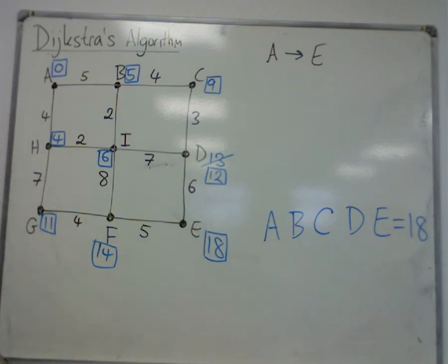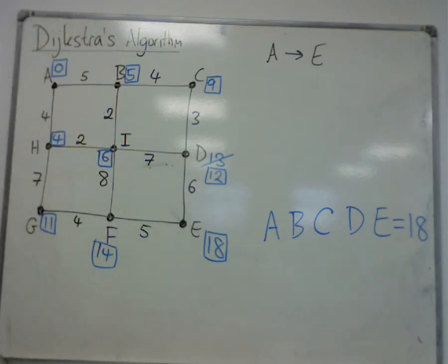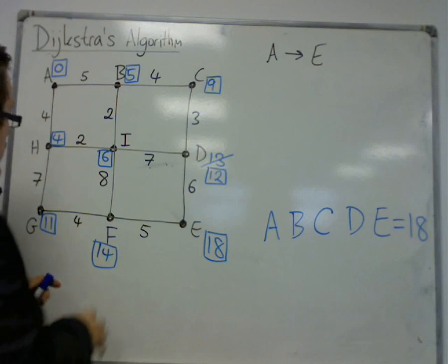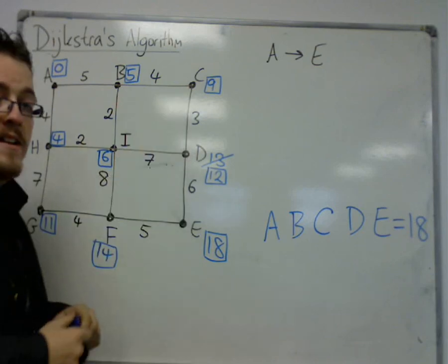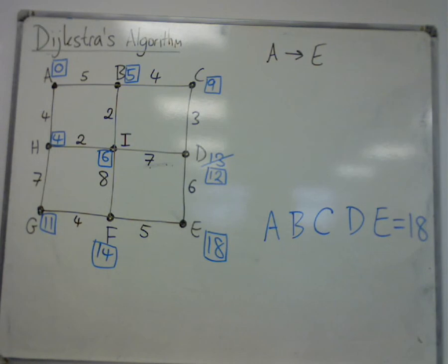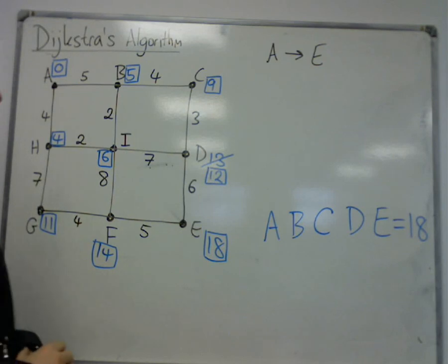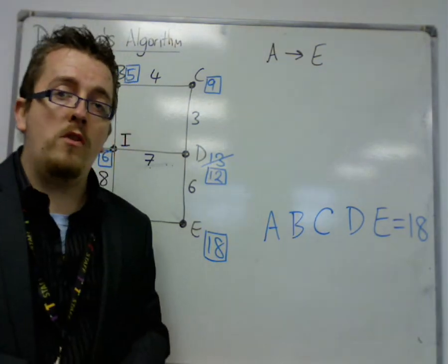If it then said, what's the shortest distance from C to G, however, yes, you would have to do Dijkstra's algorithm again. You can't just do 11 take away 9. Hopefully that question, however, wouldn't arise. But if it asks you from A to any of the other vertices, then yes, just read it straight from your graph.